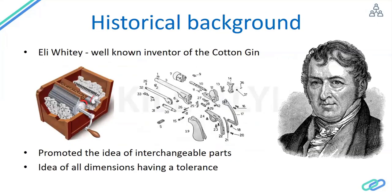It all started with Mr. Eli Whitney, who is a well-known inventor of the cotton gin — a machine which separates the seeds from the cotton using manual operations. He is a notable person with whom Geometric Dimensioning and Tolerancing started. He is the one who promoted the idea of interchangeable parts.